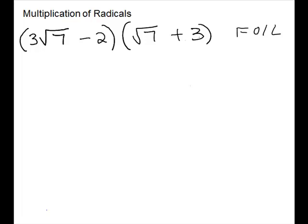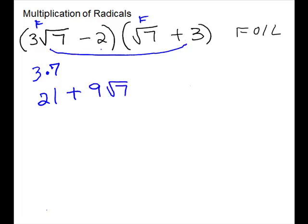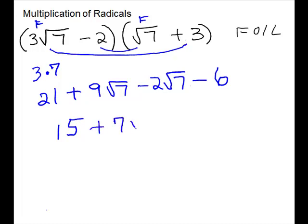We have another problem with two binomials, so we will do our first terms. The 3 will multiply — it would be a 1 outside — so it's going to be 3. Square root of 7 times square root of 7 takes the radical off, giving us 21. Then outside: our 3 multiplies by the 3 on the outside of the radical, so 3 times 3 is 9 times square root of 7. Inside: minus 2 times square root of 7. And last: minus 6. Then we clean up — 21 minus 6 gives us 15. These are like radicals, so they combine: 9 and minus 2 gives us 7 times the square root of 7.